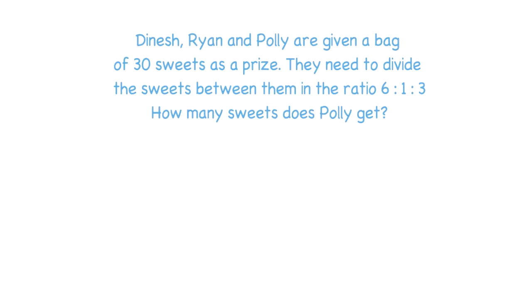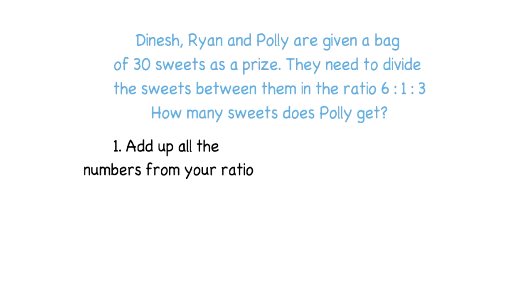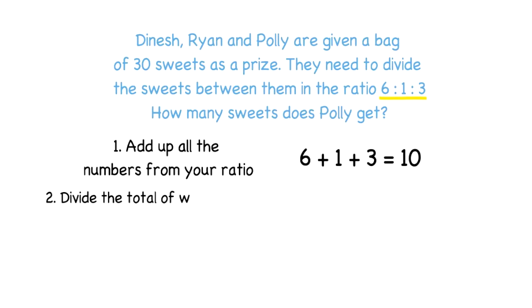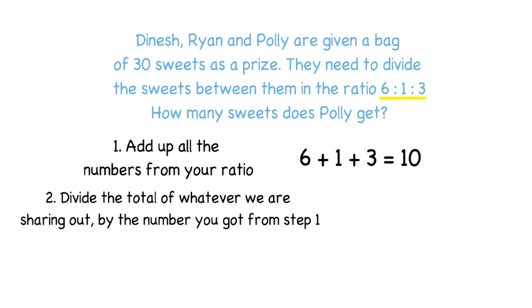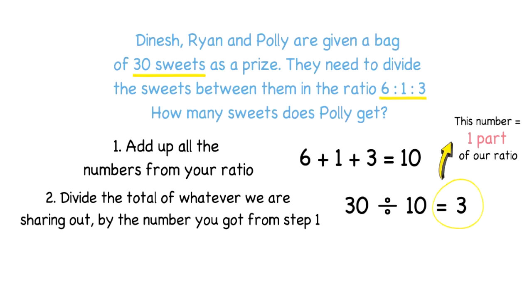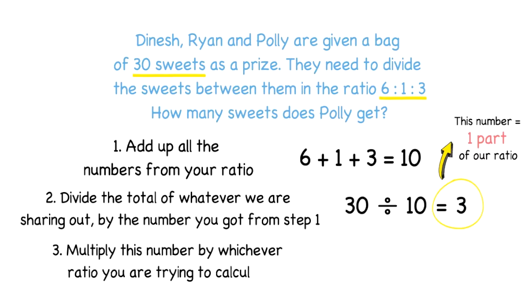We'll go through scaling in a minute, but let's start with dividing into a ratio. The first thing we always do is add up all of the numbers from our ratio. We've been given six to one to three, so I add those numbers up to make ten. Next, we divide the total we're sharing out by that number — we're sharing out 30 sweets, so 30 divided by 10 gives me three, which is equivalent to one part of our ratio.